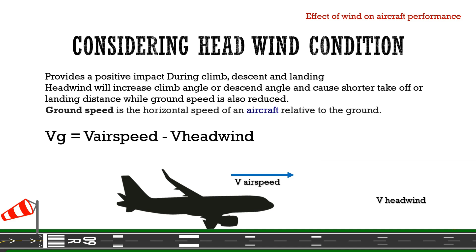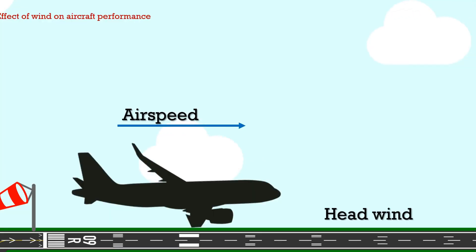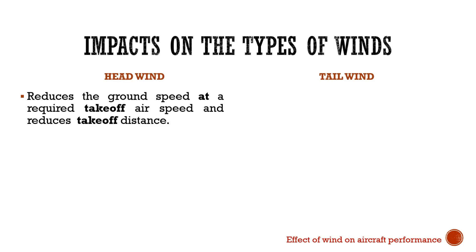Ground speed is the horizontal speed of an aircraft relative to the ground. This ground speed equals airspeed minus headwind. Now we will see the impacts on the types of wind. In a headwind, the ground speed at a required takeoff airspeed is reduced, which reduces the takeoff distance.